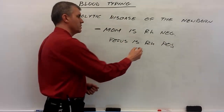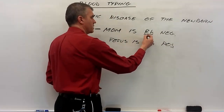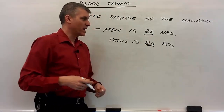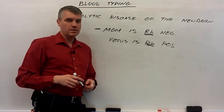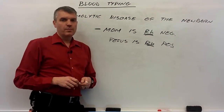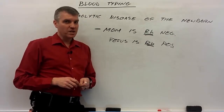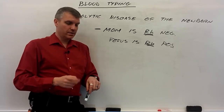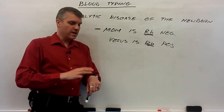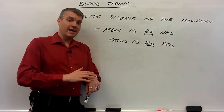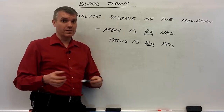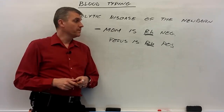To really get this, you have to understand Rh a little bit better and how our body reacts in terms of Rh. If a person is Rh negative — so that means their blood type is either O negative, A negative, B negative, or AB negative — they don't have Rh on their red blood cells is the key.